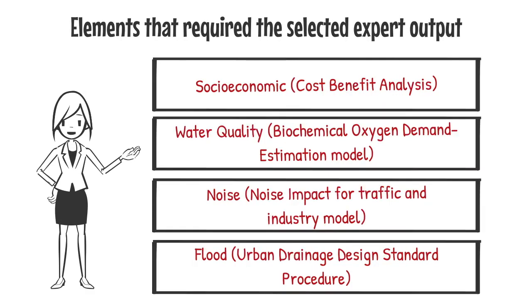Cost-benefit analysis is normally used for socioeconomic assessment; for water quality, the biochemical oxygen demand estimation model is used; for noise impact, traffic and industry models are used; and for flood, the urban drainage design standard procedure is referred to. The impact assessment is in Step 6.